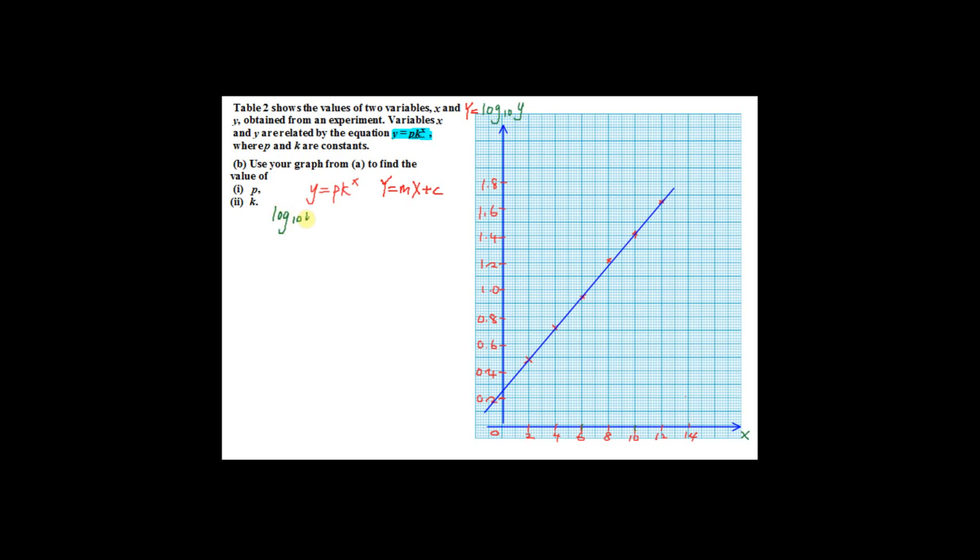We know that big Y equals log 10 y. So to convert to the linear form, we have to put log 10 on both sides. So you have log 10 y equals log 10 pk to the power x. For multiplication, you change to addition. So you have log 10 p plus log 10 k to the power x. Power x here, you can bring in front. Your x becomes x multiplied with log 10 k plus log 10 p. So rearranging, you have log 10 y equals log 10 k multiplied with x plus log 10 p.